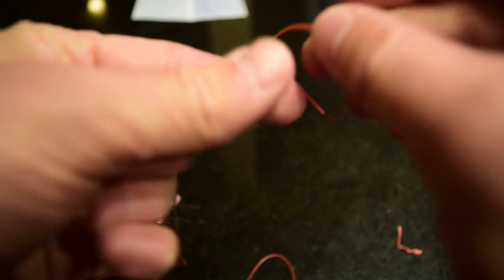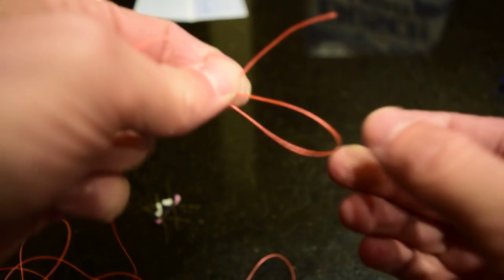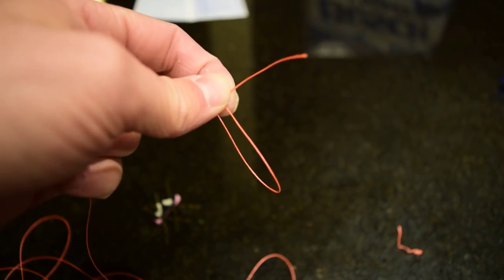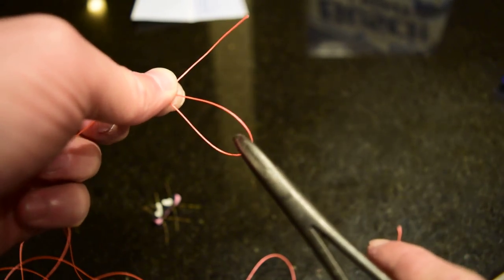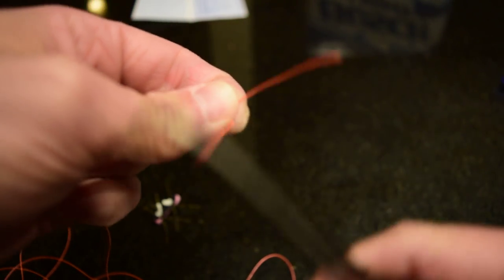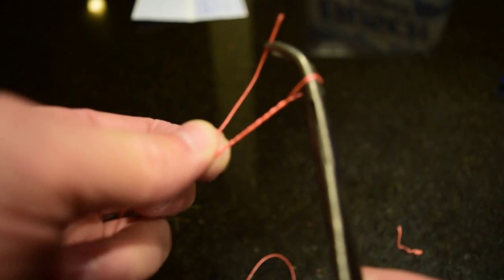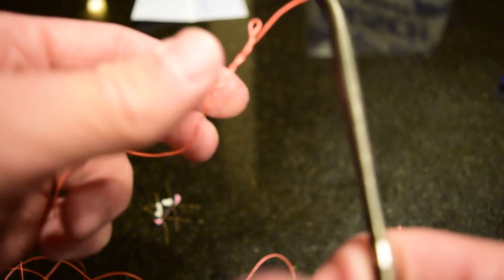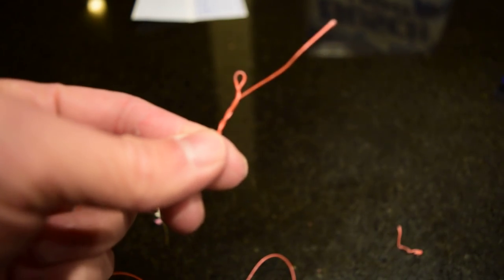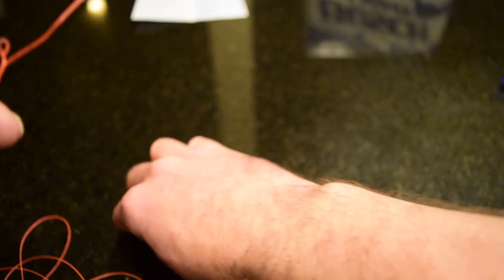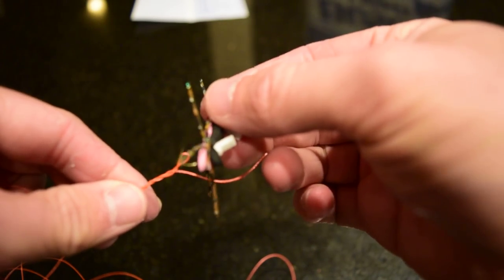We take the tag end and our main line and pinch them together. Now I'm going to stick my forceps through that loop and go one, two, three, four, five, six. Catch that tag end, pull it through. Now you can see that little loop right there. We're going to catch that loop on the hook.